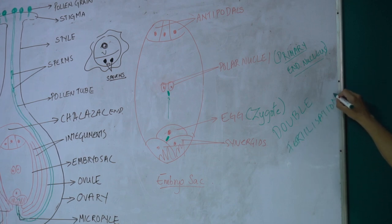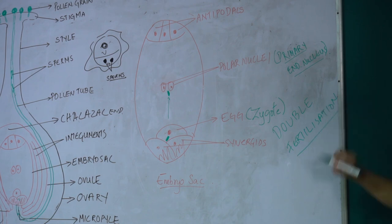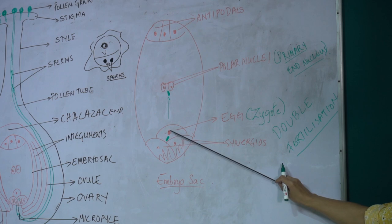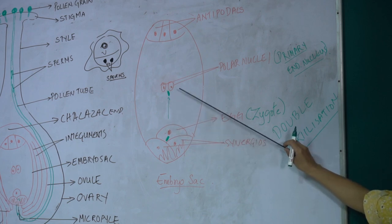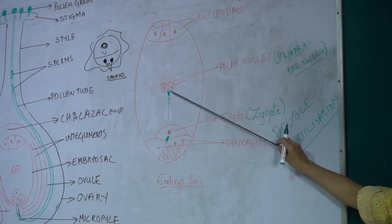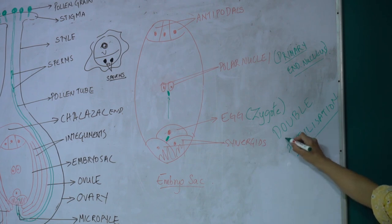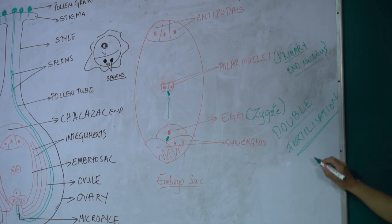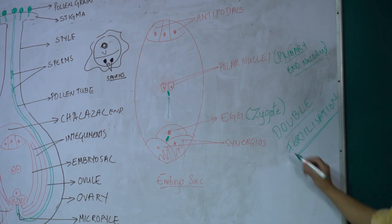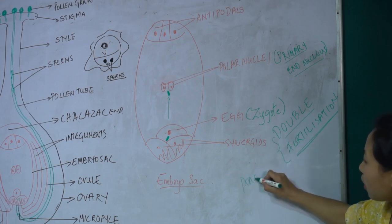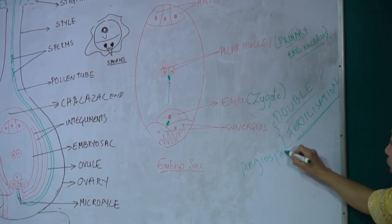The fertilization product of the second sperm and the two polar nuclei results in the formation of the primary endosperm nucleus. Since there are two fertilizations taking place — one between the first sperm and the egg producing the zygote, and a second between the second sperm and the two polar nuclei resulting in the secondary endosperm nucleus — this phenomenon is known as double fertilization.